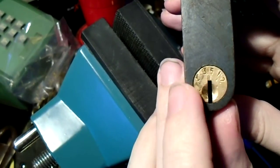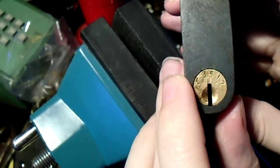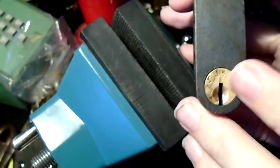Even if you can't find key blanks for it, it's pretty simple to make your own if you can just get a flat strip of steel or brass and file it down to the right height.